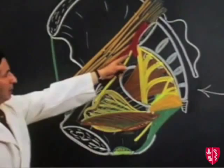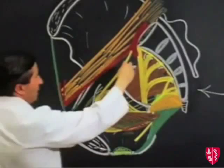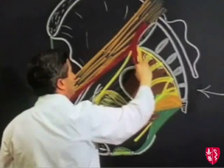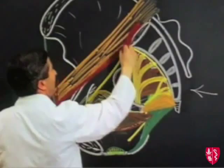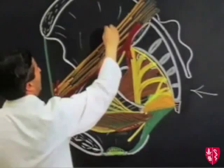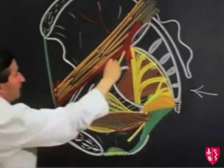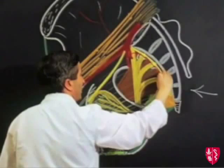Now we can turn to the internal iliac artery again. We left it here in front of the sacroiliac joint. It passes down and almost at once divides into an anterior division and a posterior division. The posterior division gives off three branches: one passes upwards and laterally deep to the psoas into the false pelvis — this is the ilio-lumbar artery. Another branch passes down on the side of the sacrum, called the lateral sacral artery.